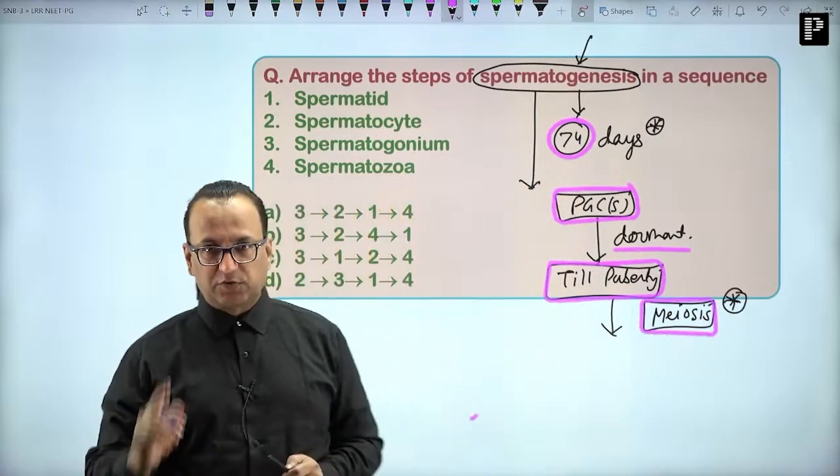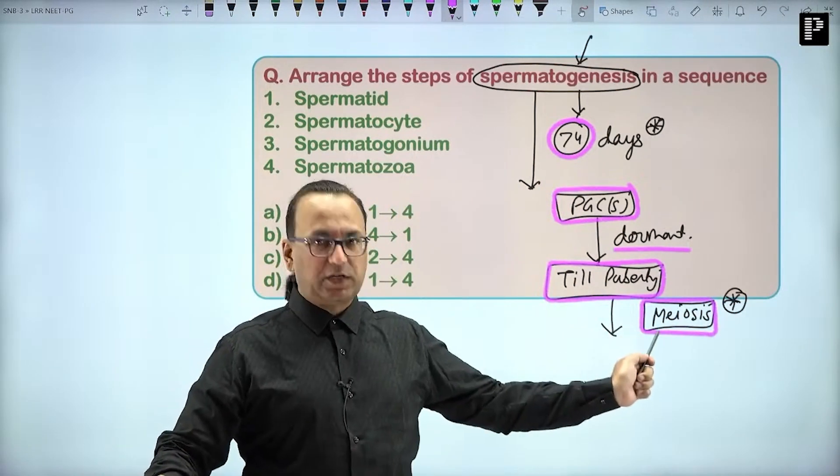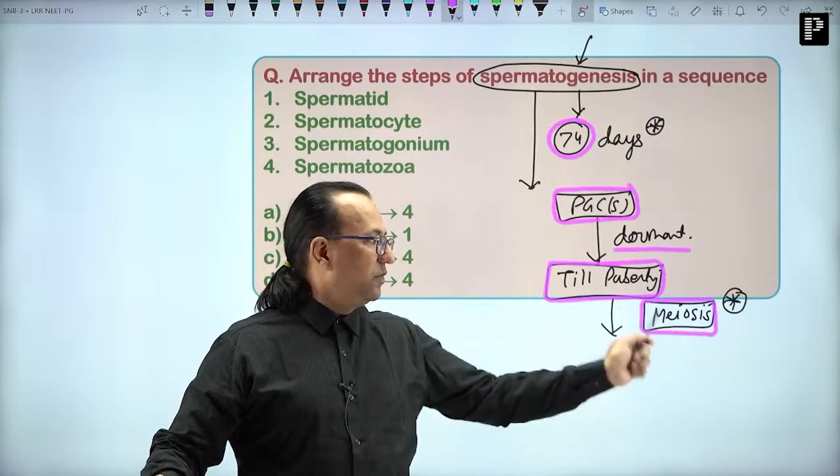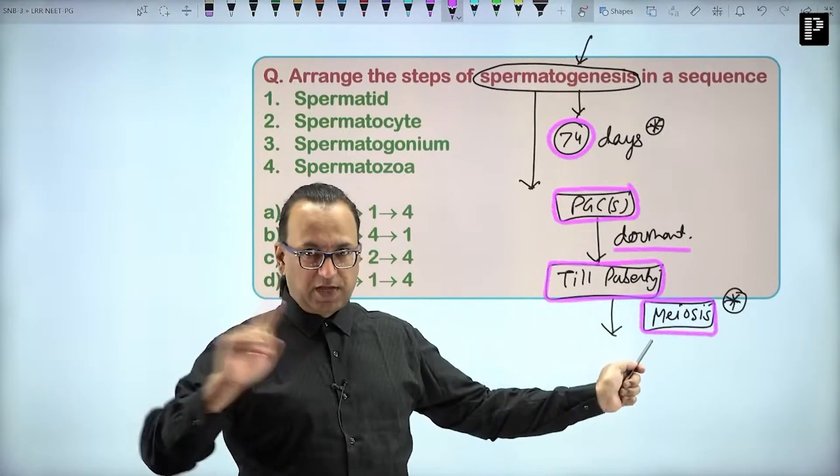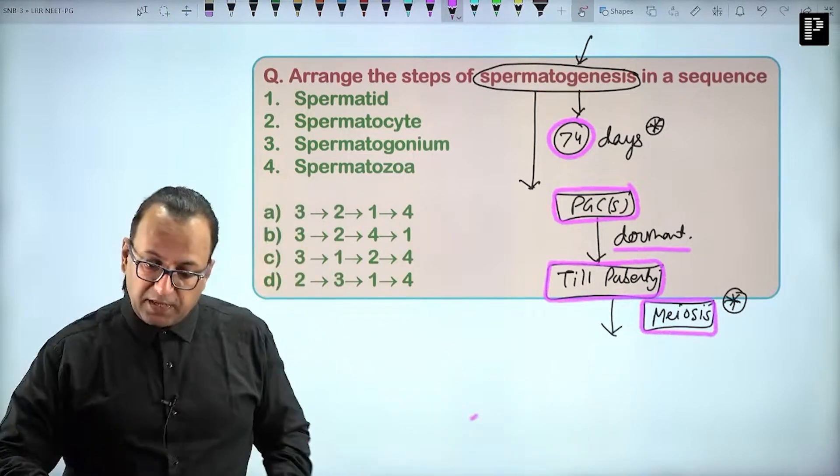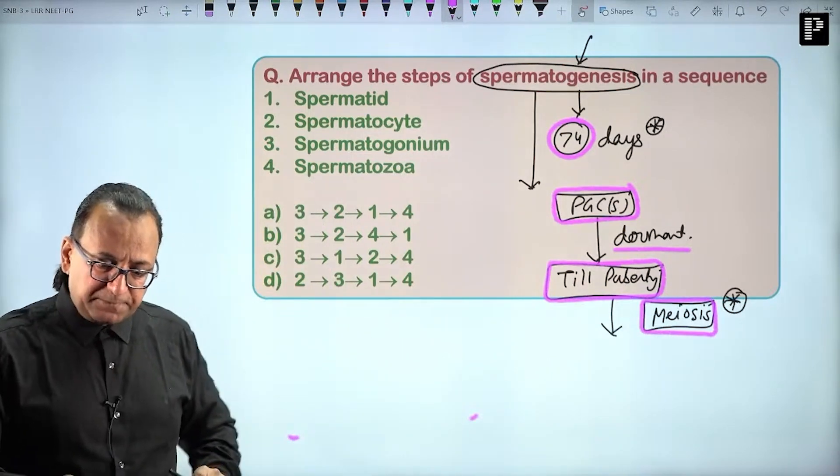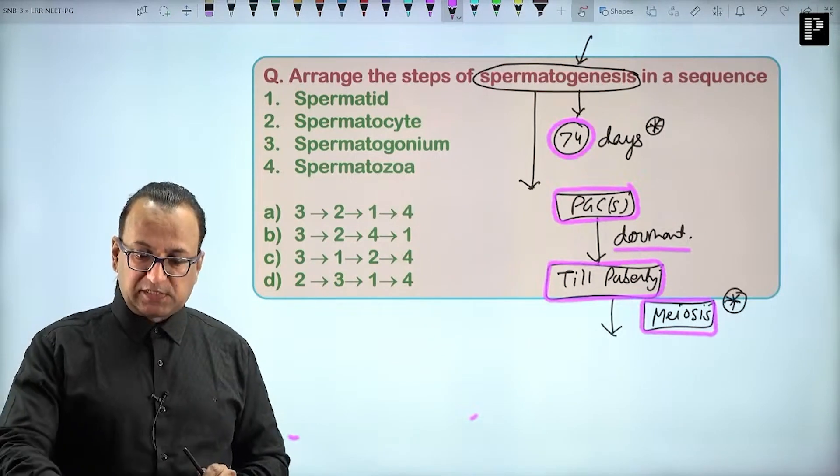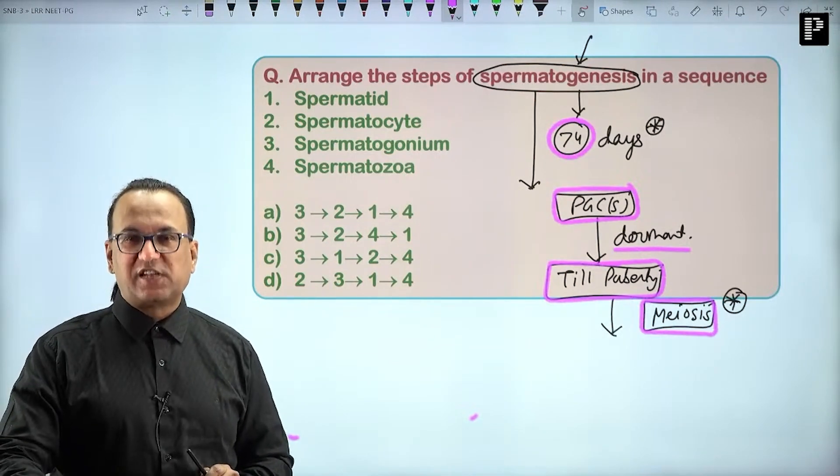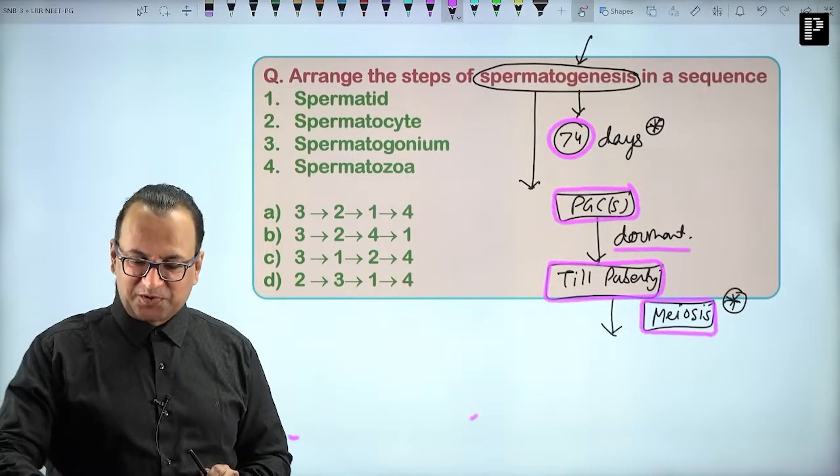So a question came: do you have meiosis in the pre-pubertal testis? You say no. In pre-pubertal testis, we do not have meiosis. Meiosis begins only after puberty. For NEET PG, if you are talking about rapid revision, last resort rapid revision, it is sufficient.